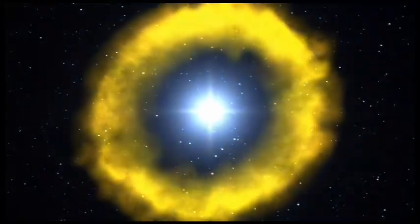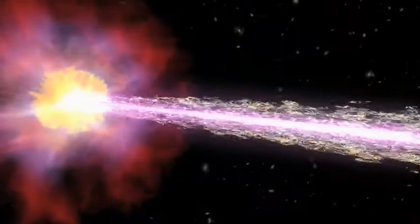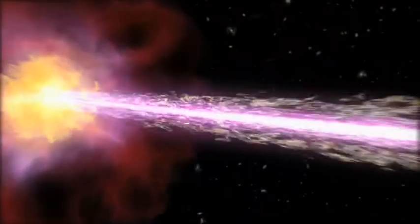We observed a gamma ray burst. A gamma ray burst is a huge explosion. That gamma ray burst produced a large number of photons, one of which had enormous energy, very short wavelengths. Those photons travelled seven billion years to reach us, and yet the highest energy, the shortest wavelength photon, arrived within 900 milliseconds of the lower energy photons.